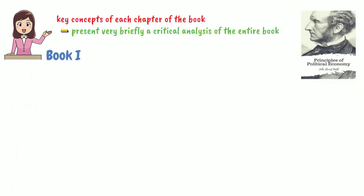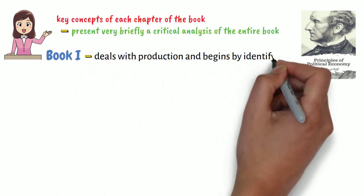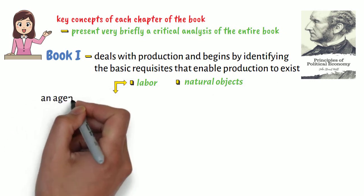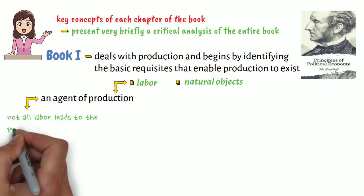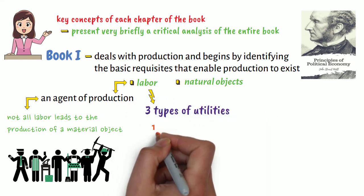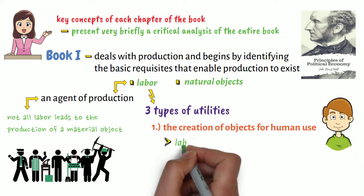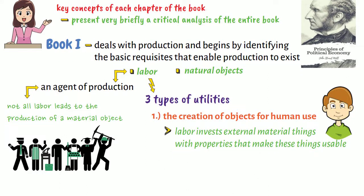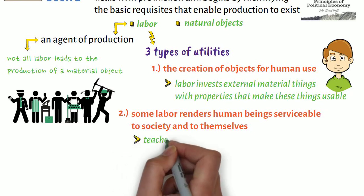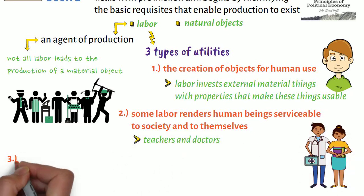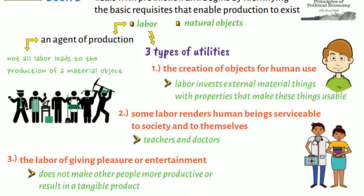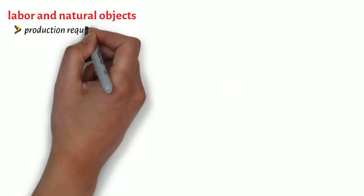Book 1 deals with production and begins by identifying the basic requisites that enable production to exist. Labor may be defined as an agent of production, though not all labor leads to the production of a material object. Labor produces three types of utilities: the first is the creation of objects for human use, wherein labor invests external material things with properties that make these things usable. Second, some labor renders human beings serviceable to society and to themselves, such as the labor of teachers and doctors. The third utility is the labor of giving pleasure or entertainment, which does not make other people more productive or result in a tangible product. In addition to labor and natural objects, production requires capital, without which it would cease.